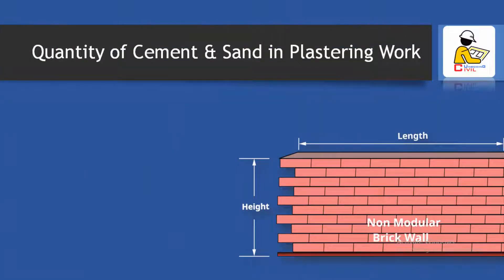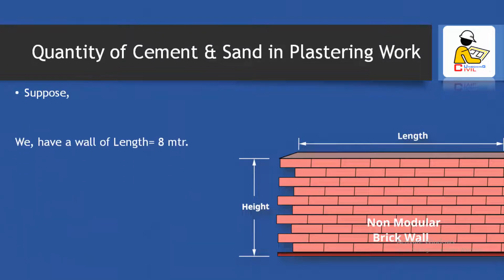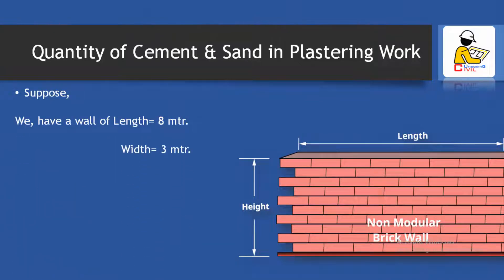Suppose we have a wall of 8 meter length and height of 3 meter. We have to cover it by plastering work, in which the thickness of the plaster should be normally 12 mm, or 0.012 meter.